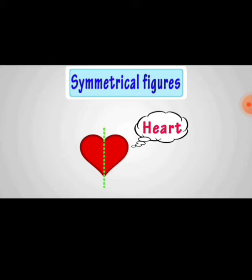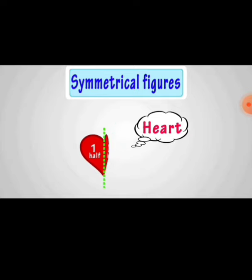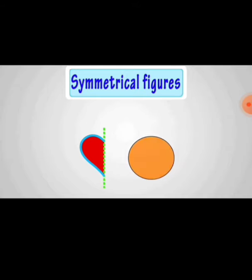Observe the heart here. The dotted line is called line of symmetry. A line of symmetry divides a figure into two equal halves. When one half is completely covered and the other half is closed, this shape is a symmetrical shape.